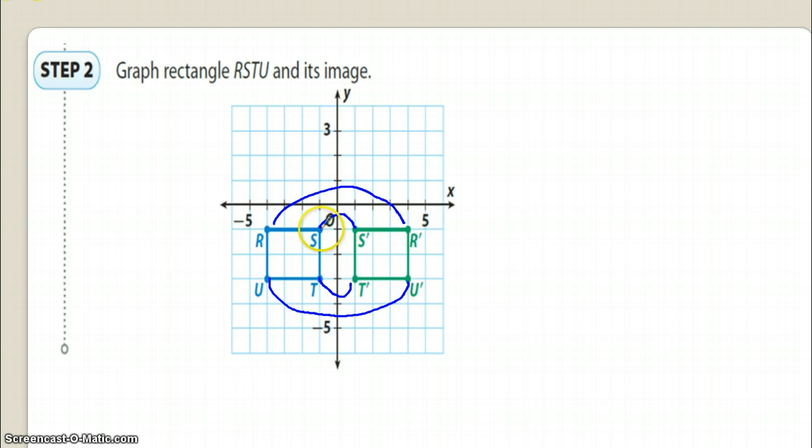We know we did it right because if we look at x, x is one unit, so it should be one unit here. R is 1, 2, 3, 4, so it should be 1, 2, 3, 4 here. U is again 4, and it should be 4 here. So we know we did it right if we look at the distances in our preimage and our image. Okay, let's move on.